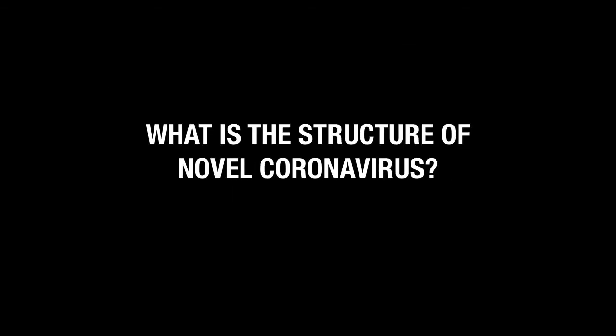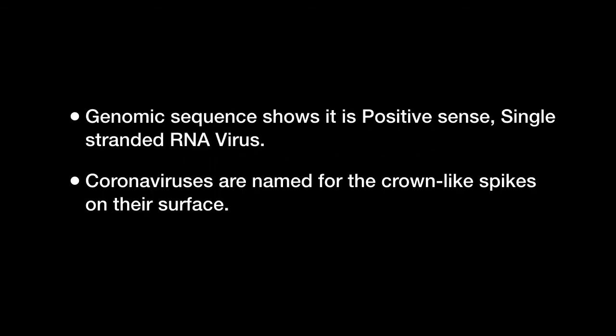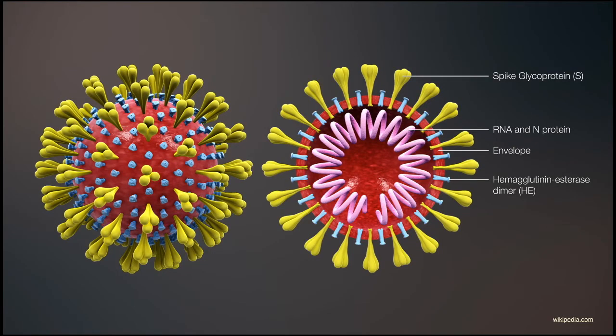Now let's talk about its structure. Genomic sequencing shows it is a positive-sense single-stranded RNA virus. Coronaviruses are named for the crown-like spikes on their surface. This is the model of the coronavirus — the spikes can be seen, and in pink color is the RNA of this virus. This is the cross-section of the virus.